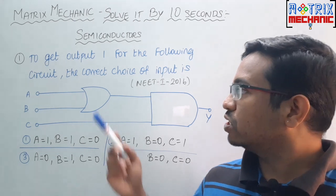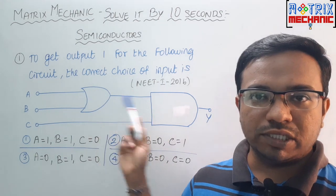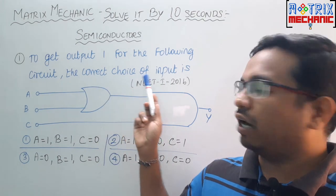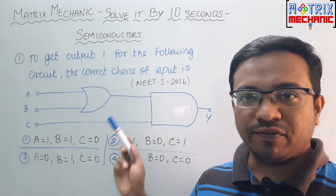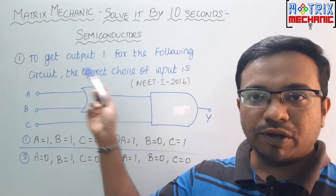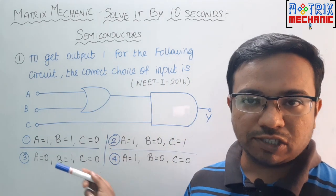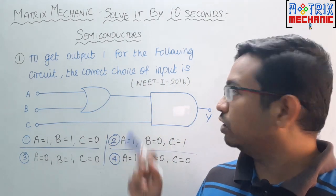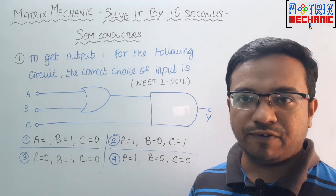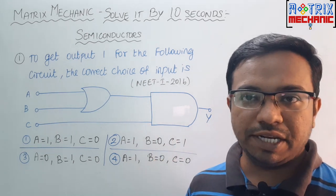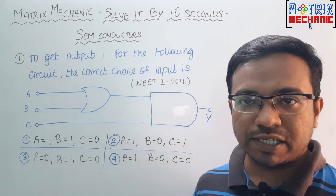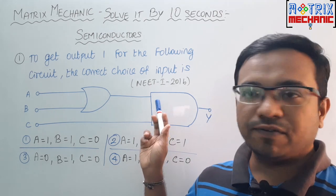Now see this question. To get the output for the following circuit, what is the correct choice of input? They have given a circuit diagram. So we need to get the output of 1, and what will be the correct choice of input they are asking. This question has been asked in NEET first phase 2016. In 2016 it was conducted by 2 phases, phase 1 and phase 2. This is the question from first phase.